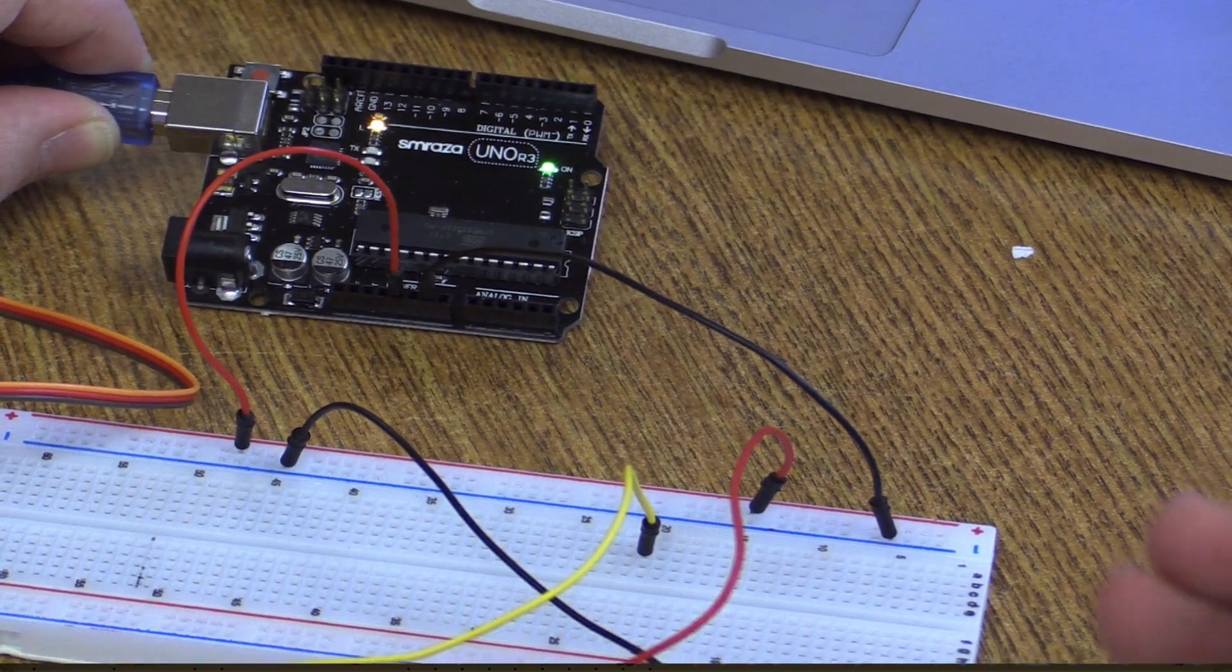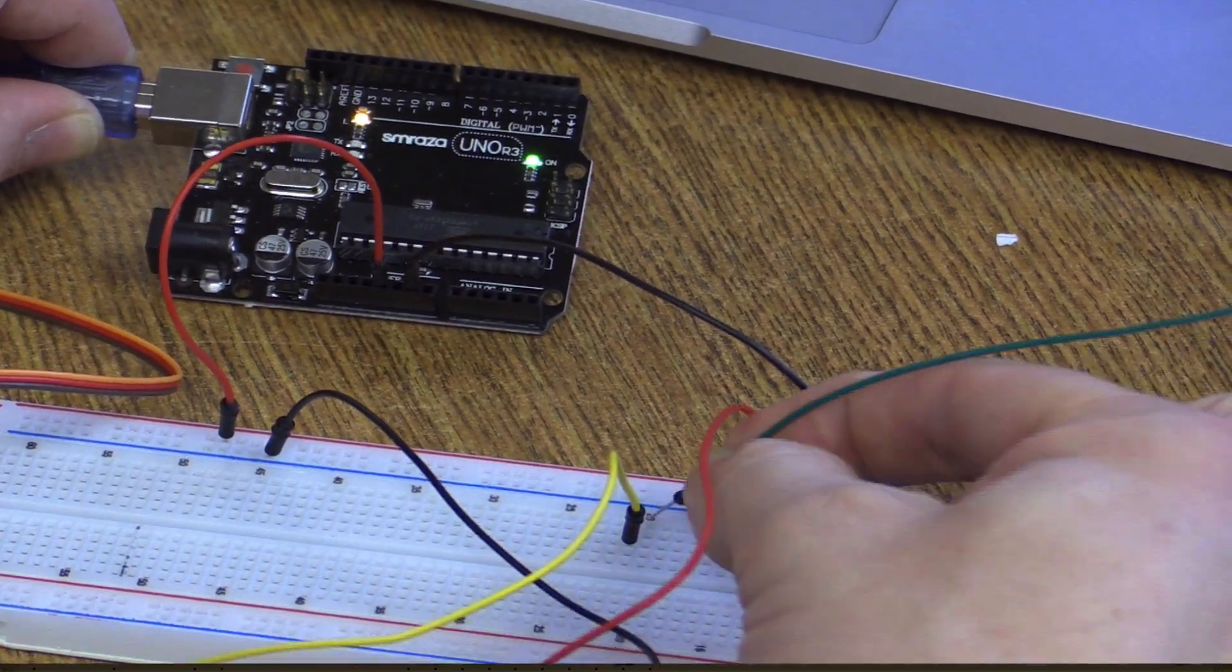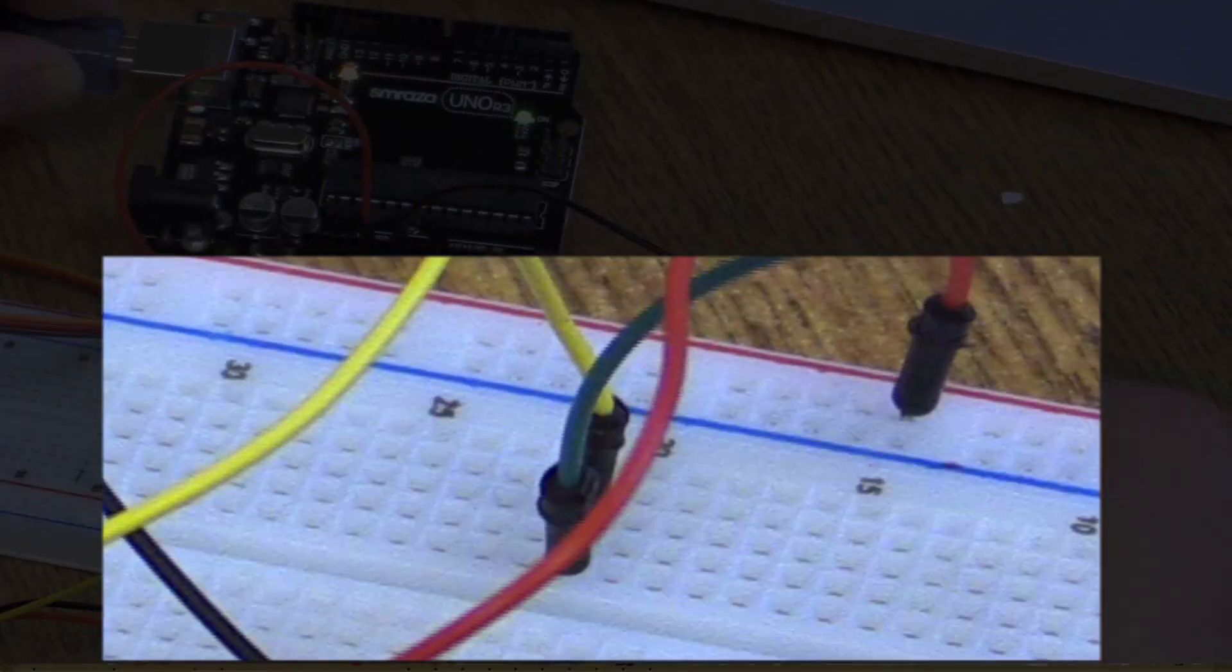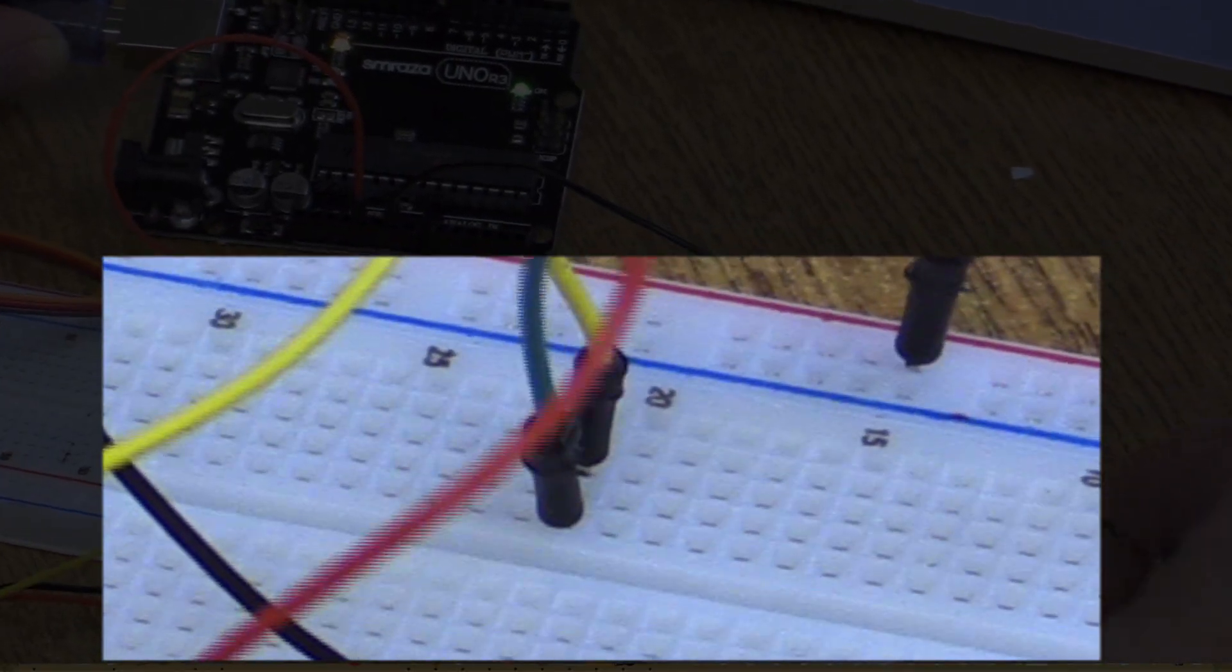And we're going to take this one and connect it to the yellow one. Again, each of these five holes are connected. It's just like connecting those two wires together. So those are fused together now.